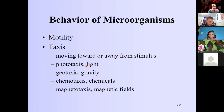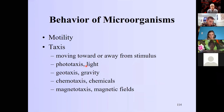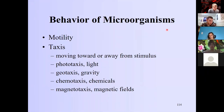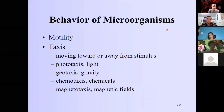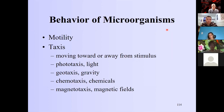Why would an organism want to be positively phototactic? If you're photosynthetic you want to move towards light — that's fairly obvious. Why would an organism be negatively phototactic? If light levels are too high there can be photoinhibition. Also, many obligate anaerobes are negatively phototactic — moving towards high light areas means more photosynthesizers, which means more oxygen production, which can kill obligate anaerobes.